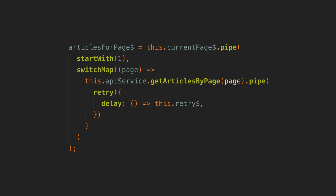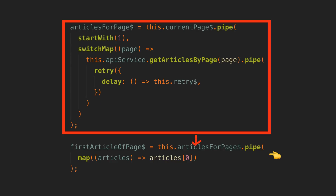I can see what this is and how it will change over time just by looking at the declaration of articles-for-page. Its value is derived from the current page value. It will take that page value and use it to return a stream of articles from the get-articles-by-page method. It will also initially start with a value of one and if the data we are trying to fetch fails to be retrieved, the fetch attempt will be retried every time the retry subject is triggered. So we know upfront how this thing behaves and we can react to this value changing. We never need to update this derived value — it will just automatically update any time articles-for-page changes.